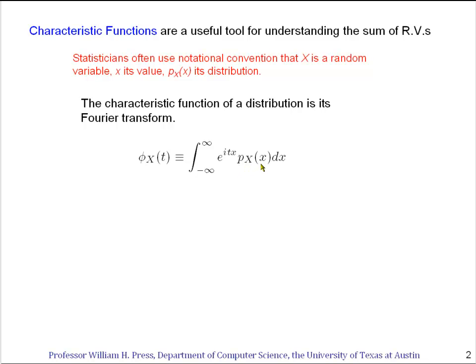Its Fourier transform is defined as the integral of it times e to the i t X. So X the variable here is the same as the variable here, and the transform itself is a function of this other variable here called t, which then appears on the left hand side.